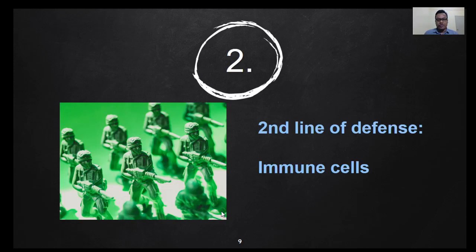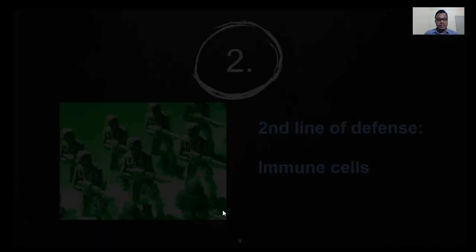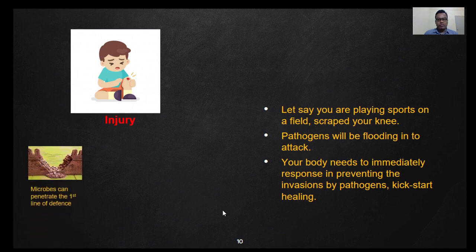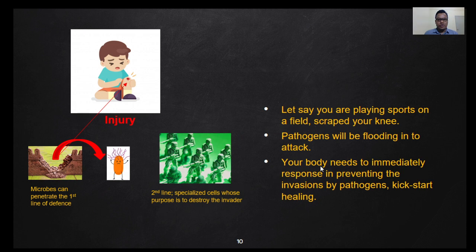For the second line of defense in innate immunity or innate immune response, let's say you are playing sports and you injure your knee. Pathogens will be flooding in to attack because the microbes can now penetrate the first line of defense. Your body needs to immediately respond by preventing the invasion by pathogens and also kickstart the healing process. After the first line of defense is breached, the second line of defense, which consists of specialized cells whose purpose is to destroy the invader, will start.